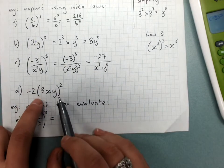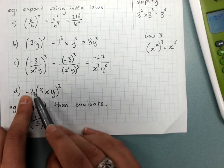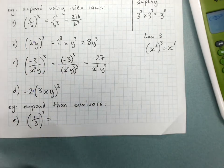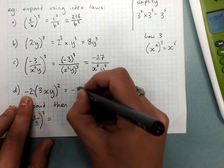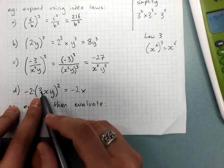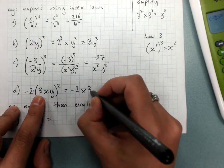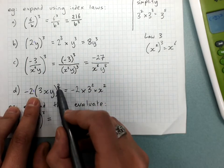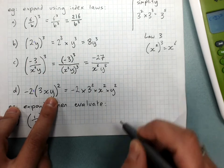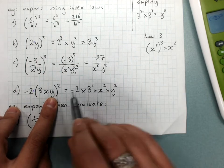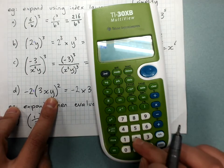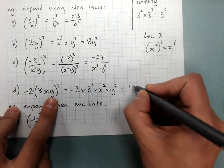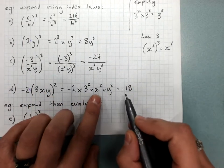This next example has a number in front of the brackets. The negative 2 multiplied by the brackets is not inside the brackets, so it's not involved in the power. We get negative 2 times 3 squared times x squared times y squared — all the parts inside the brackets get squared. The number part gets evaluated: negative 2 times 3 squared is negative 2 times 9, which is negative 18. So the answer is negative 18x squared y squared.